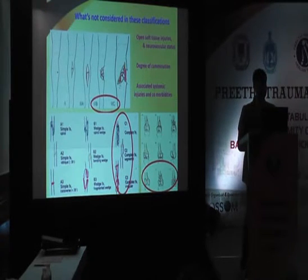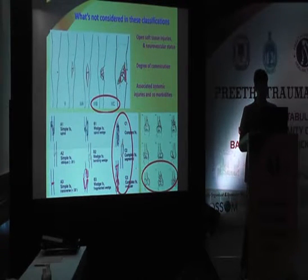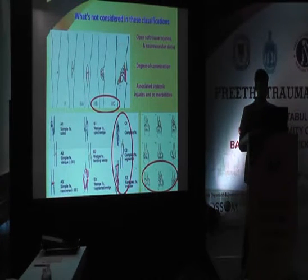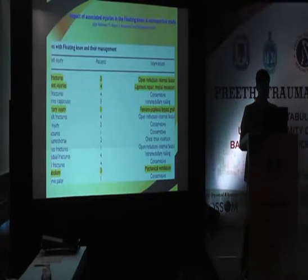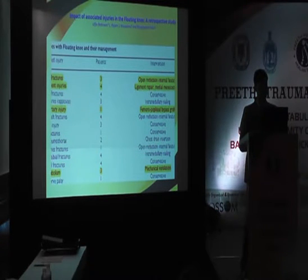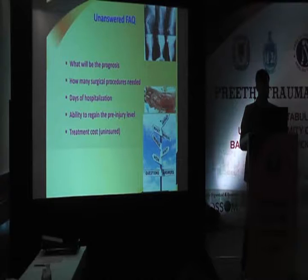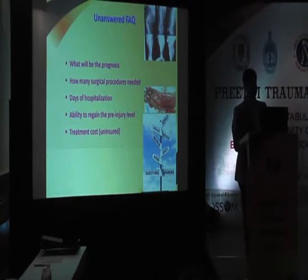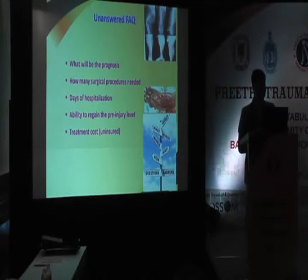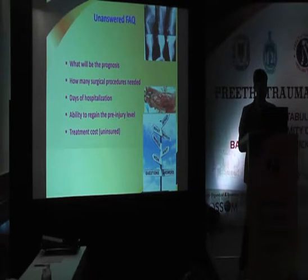What is not considered in these classifications? Open injuries, neurovascular status, degree of comminution, and associated injuries and comorbidities. Rathnam et al. showed the importance of associated injuries, particularly ligamentous injuries which have poor outcomes. There are frequent questions which remain unanswered — when a patient comes in, relatives ask what is the prognosis and how many procedures will be needed.